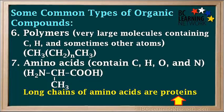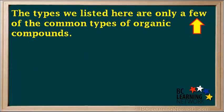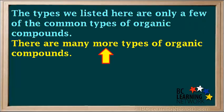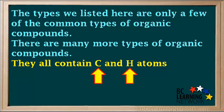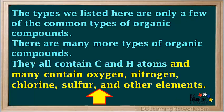Long chains of amino acids are called proteins, which make up a significant part of our bodies. The types listed here are only a few of the common types of organic compounds; there are many more. They all contain carbon and hydrogen atoms, and many contain oxygen, nitrogen, chlorine, sulfur, and other elements.